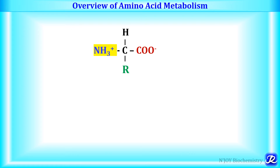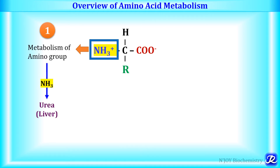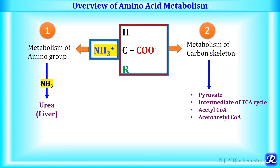The structure of an amino acid constitutes an amino group and a carbon skeleton. So amino acid metabolism constitutes two important steps. The first is removal of the amino group from the amino acids — that is, metabolism of the amino group. Ammonia is released from the amino acids and converted into the less toxic form urea, which occurs in the liver and is later excreted through the kidney via urine. The metabolism of the carbon skeleton results in the formation of either pyruvate, intermediates of the TCA cycle, acetyl-CoA, or acetoacetyl-CoA.